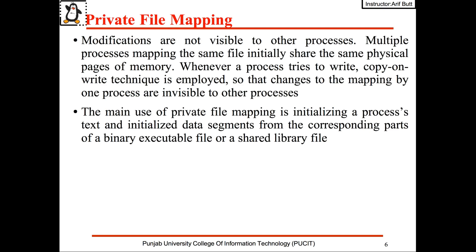In private file mapping, modifications are not visible to other processes. Multiple processes mapping the same file initially share the same physical pages, but when a process tries to write, the copy-on-write technique is employed so that changes by one process are not visible to others. The main use of private file mapping is initializing a process's text and data segments from the corresponding parts of a binary executable or shared library file.